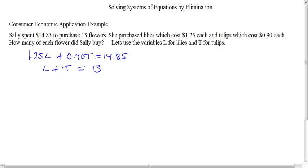For step one, I've aligned everything and I'm looking to see what I can do to get something eliminated. Looking at variable L, I see it's 1.25, and variable T is 0.90. So I need to determine what I can multiply by. Let's go ahead and just do the L.